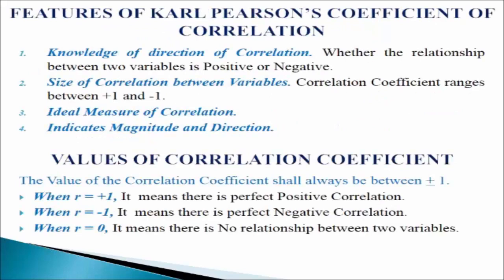Features of Karl Pearson's coefficient of correlation. First, knowledge of direction of correlation: it gives knowledge about the direction of the relationship, i.e., whether the relationship between two variables is positive or negative. Second feature, size of correlation: it indicates the size of relationship between the variables, i.e., the correlation coefficient ranges between plus 1 and minus 1.